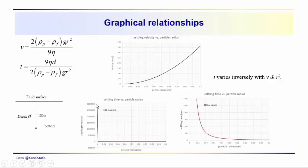For really small particle radii, the settling time becomes essentially infinite, so that part of the graph is not very useful. Starting the settling time at one hour, we can see that a particle with a radius of just under one hundredth of a centimeter (about one tenth of a millimeter) takes a little longer than an hour to settle through 100 meters. Then we get a fairly rapid drop in settling time as particles become larger — they hit the bottom much more quickly.